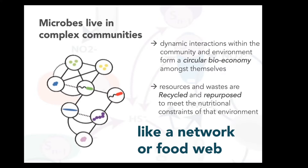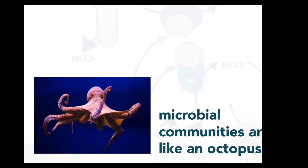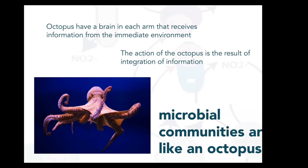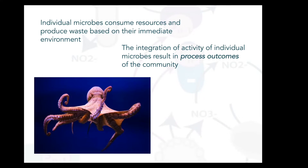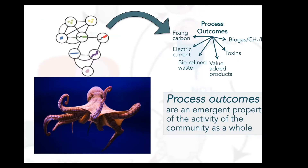This is a lot like a network or food web. I like to think of microbial communities like an octopus — octopuses have a brain in each of their eight arms that receives information from the immediate environment, and the action of the octopus is the result of integrating all of that information. Similarly, individual microbes consume resources and produce waste based on their immediate environment, but the integration of all their activity results in a process outcome — things like carbon fixation, biogas from anaerobic digestion, hydrogen, methane, electric current in a microbial fuel cell, or value-added products.